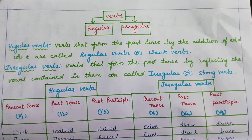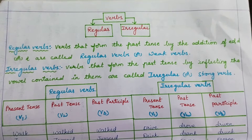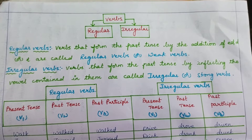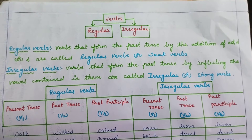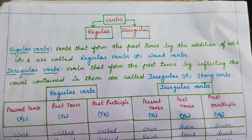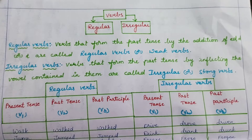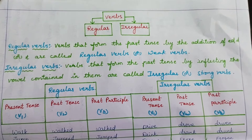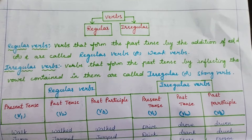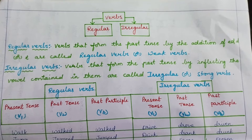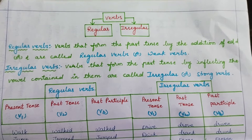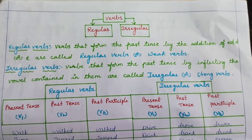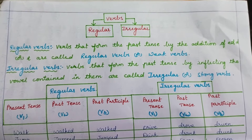Regular verbs are the verbs that form the past tense by addition of -ed, -d, or -t. Such verbs are called regular verbs or weak verbs. One more name for regular verbs is weak verbs. They form their past tense by addition of either -d, -ed, or -t.